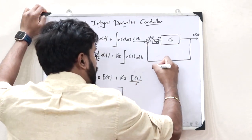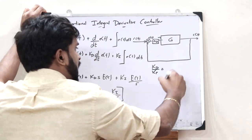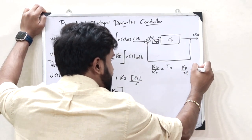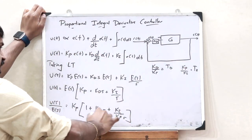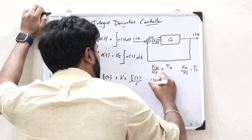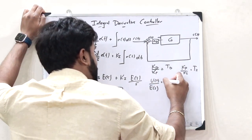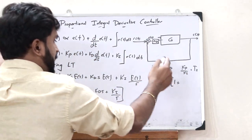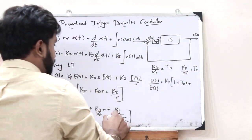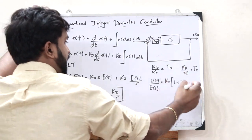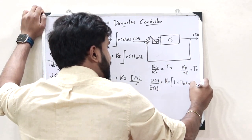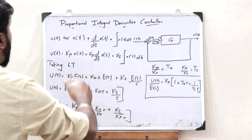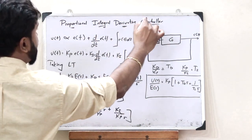Now, if Kd/Kp equals another constant Td, and if Kp/Ki equals another constant Ti, then this equation can be written as U(s)/E(s) = Kp·(1 + Td·s + 1/(Ti·s)). This is the required transfer function of a proportional integral derivative controller.